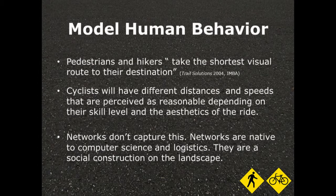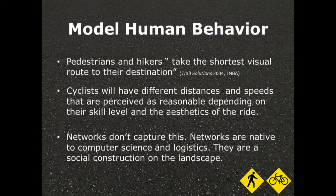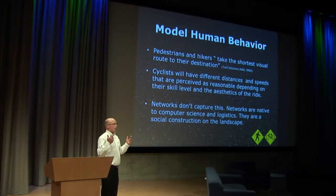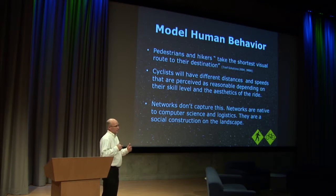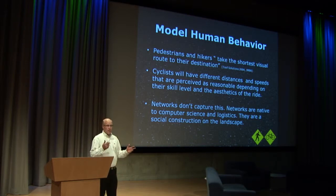Cyclists will have different distances and speeds perceived as reasonable depending on the aesthetics of the ride. New or young cyclists in high school or grade school will want to avoid really busy streets — they don't feel comfortable on them — while long-time cyclists don't really care. But by using a surface model, you can tune those things very quickly. You can also tune aesthetics like whether people are willing to walk as far next to industrial land use. In my experience, I don't believe networks capture this. Networks are native to computer science and it's easy to use them within GIS, but people don't actually operate that way in the landscape.